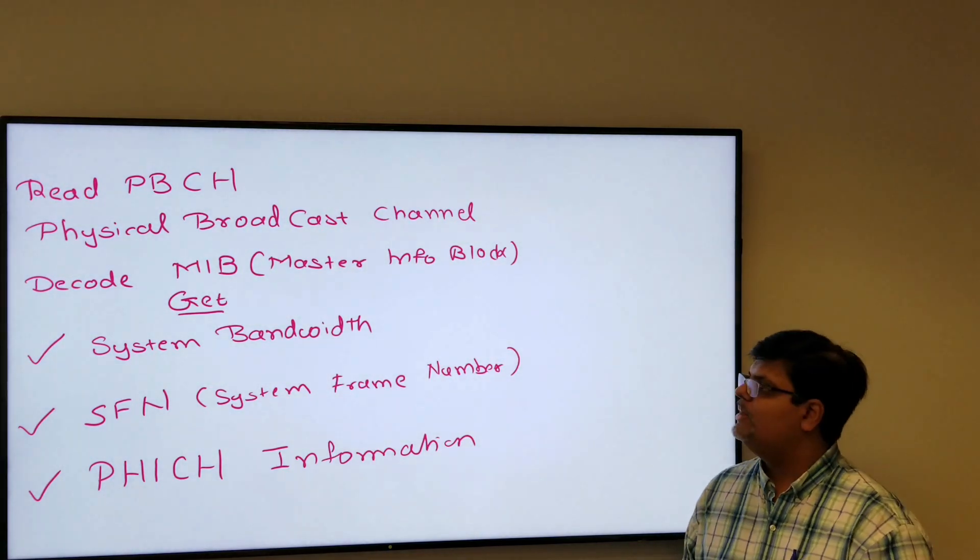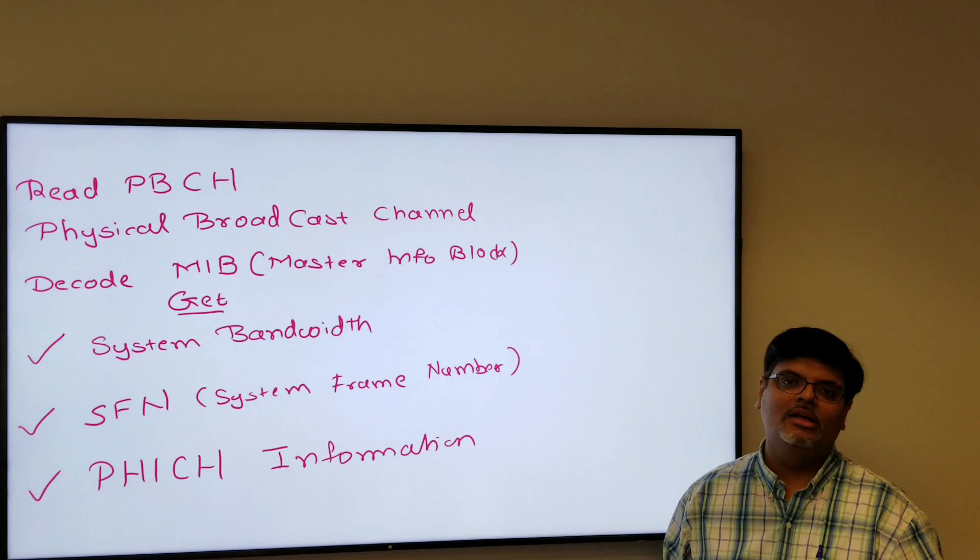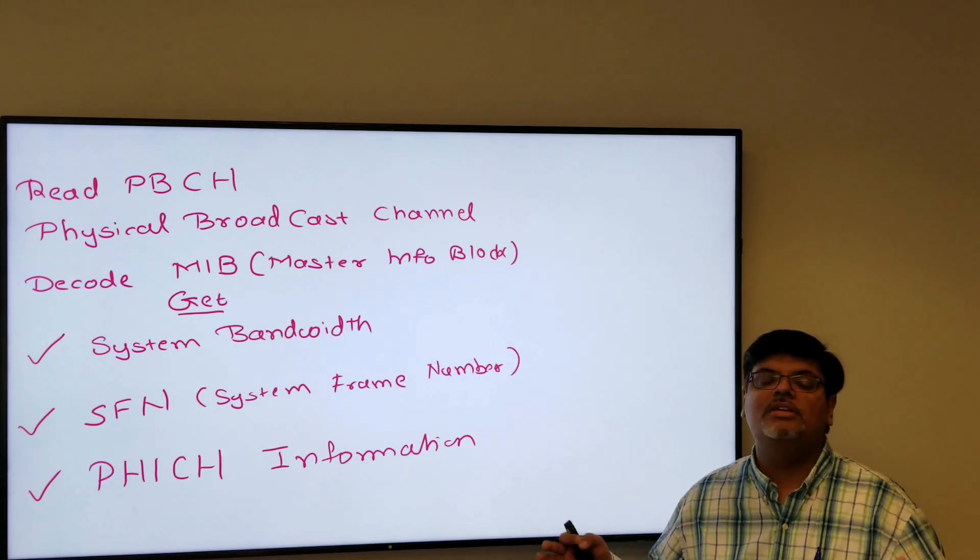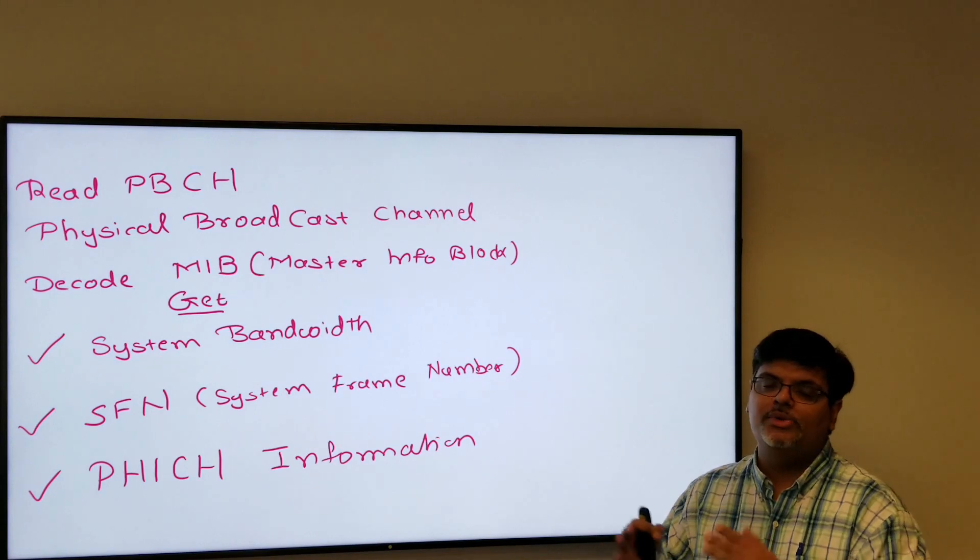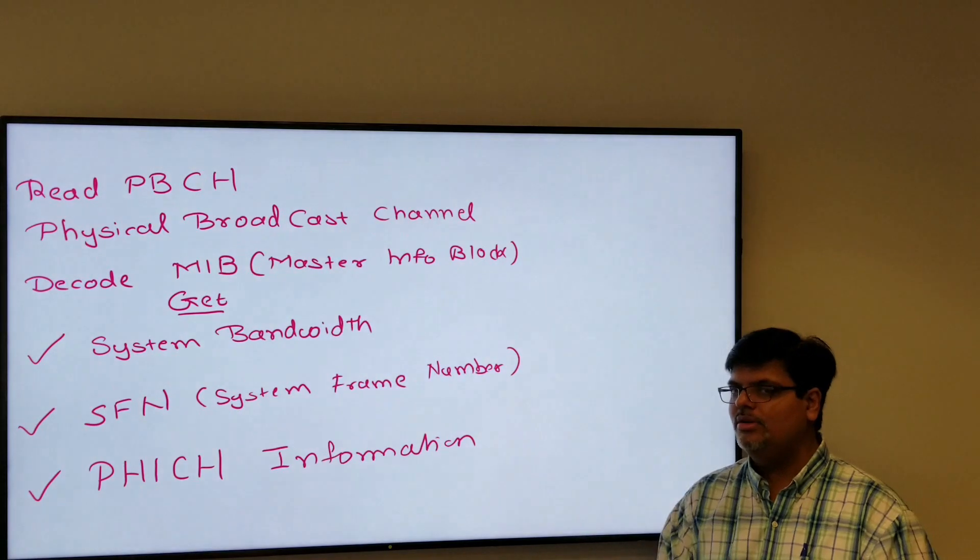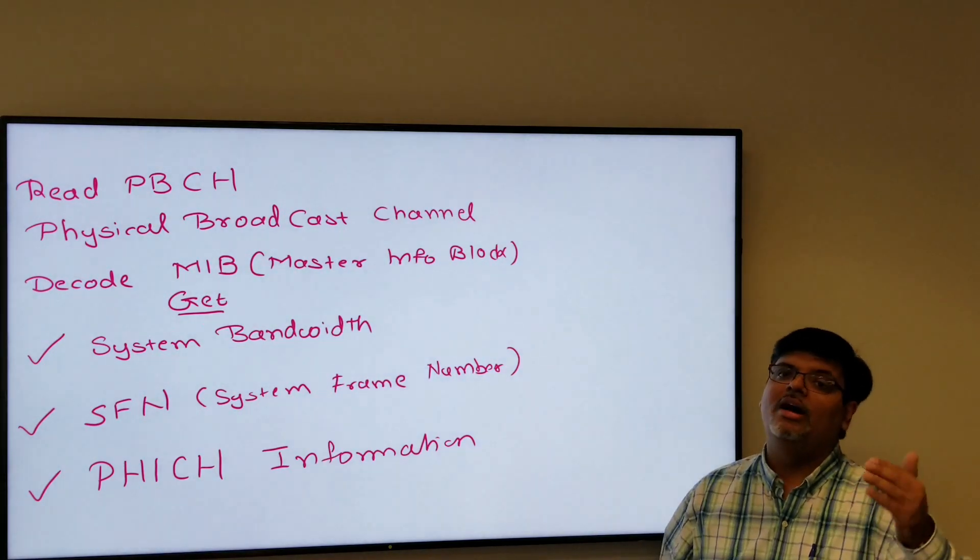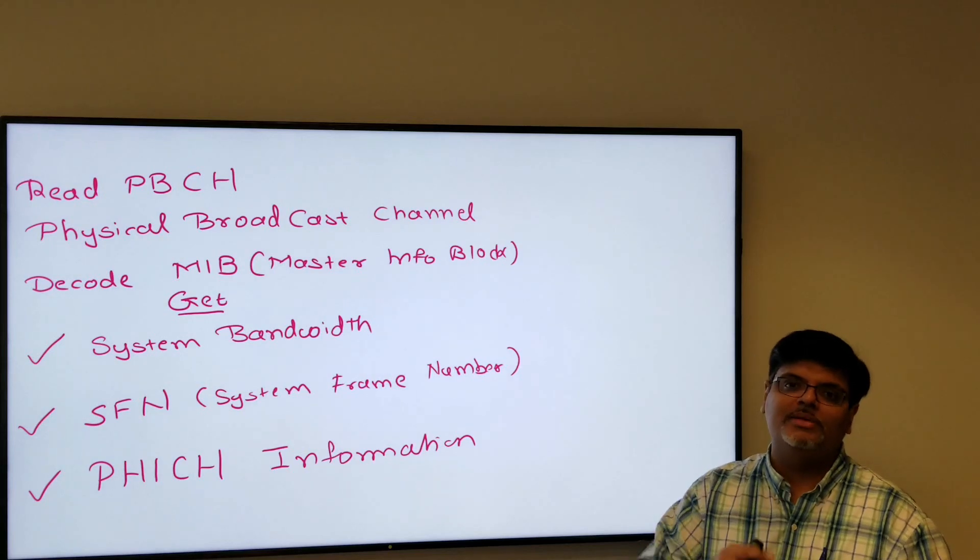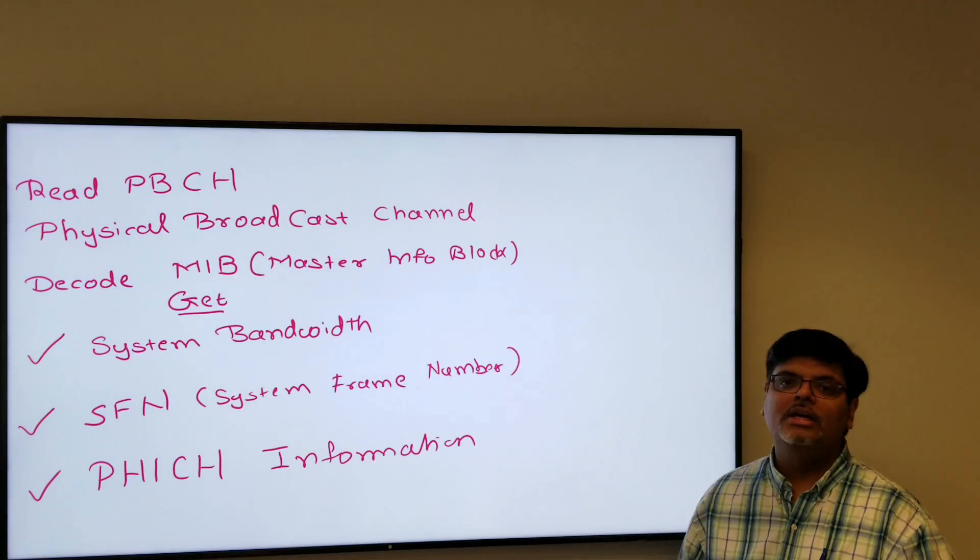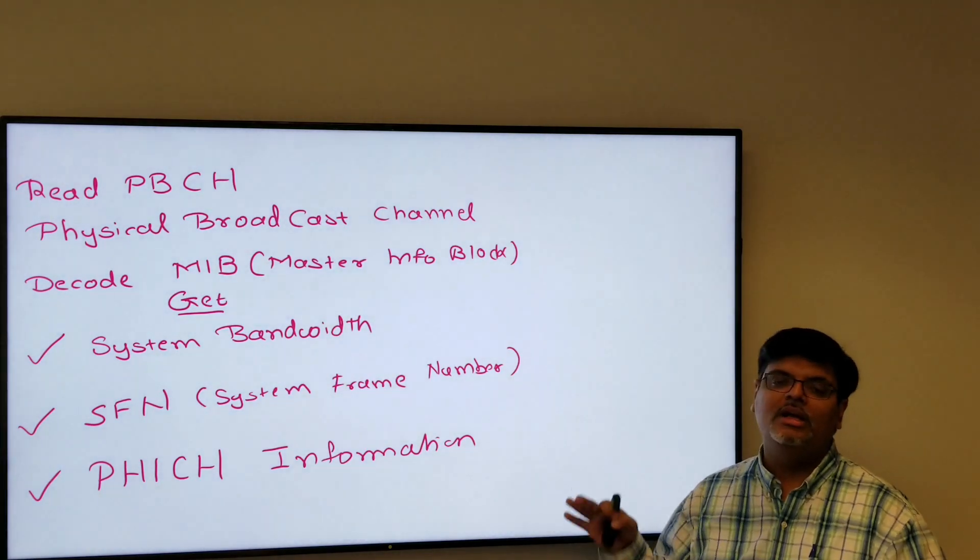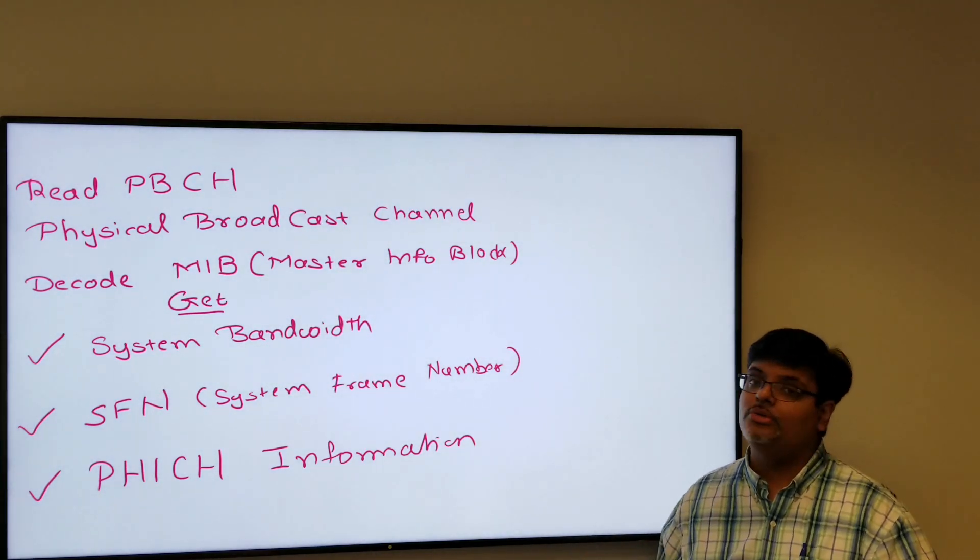In a master information block, you get the system bandwidth. As you know, LTE is able to transmit on different bandwidths: 1.4, 5, 10, 20. So UE comes to know what bandwidth it is transmitting. It gets the system frame number, so it also does the frame synchronization along with PSS and SSS and MIB. It does the slot synchronization, frame synchronization, time synchronization. MIB also carries a lot of other information such as PHICH information and other information which will help you to decode further channels which is SIB1, SIB2, etc.